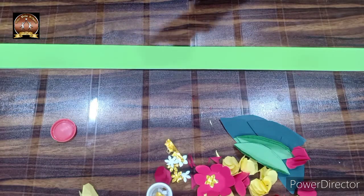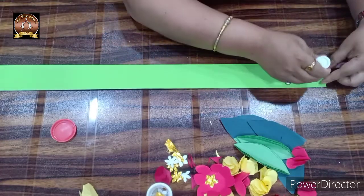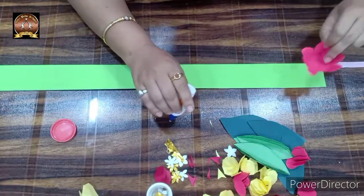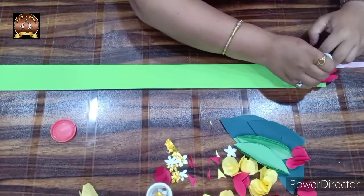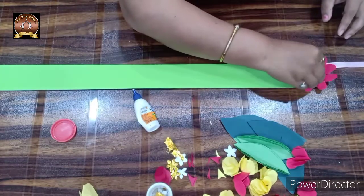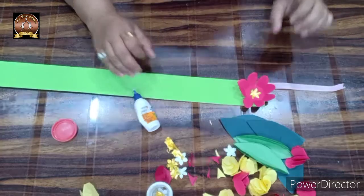After completing this, we are going to stick flowers like this. I'm taking this red flower first, and then sticking the golden one inside. If you want, you can add other sequins as well.